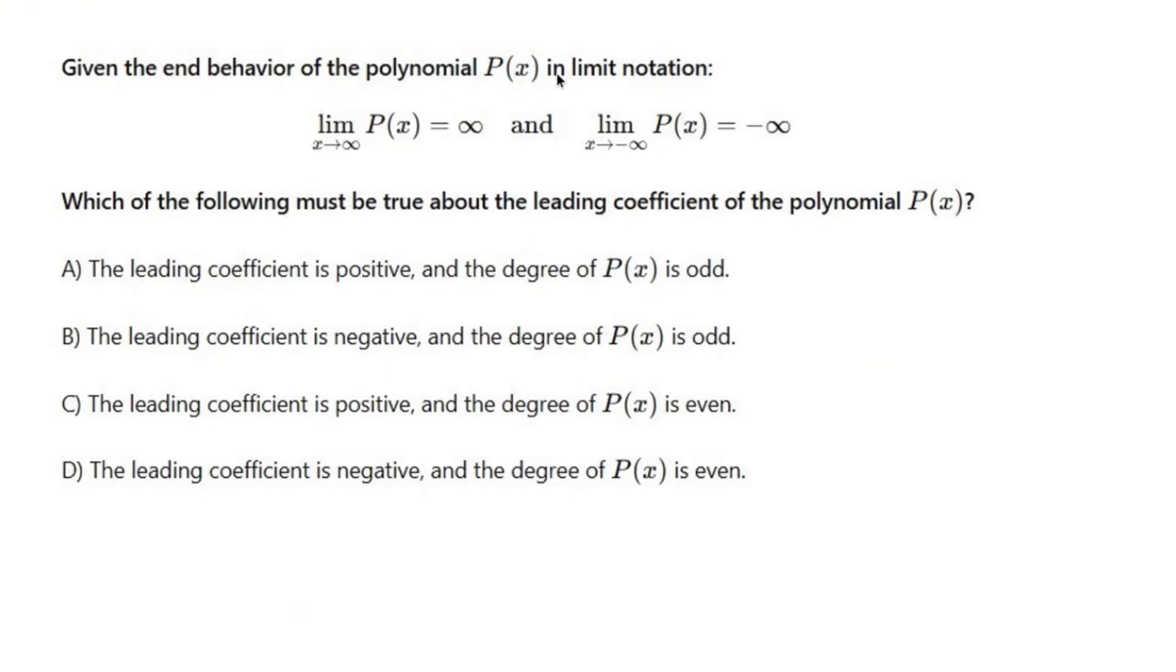Given the end behavior of the polynomial P of x in limit notation, I know that P of x is positive infinity as the limit approaches positive infinity. So the end is going to look like that.